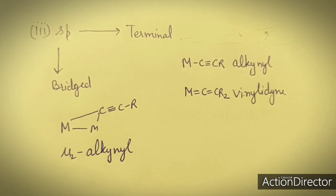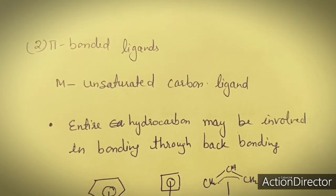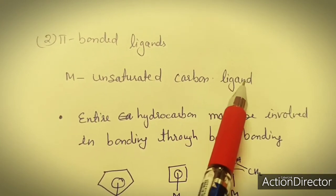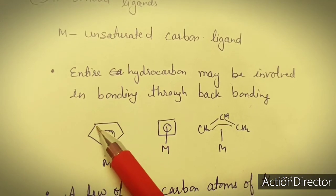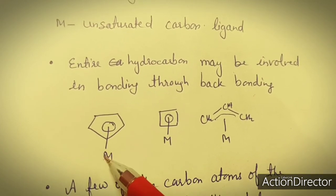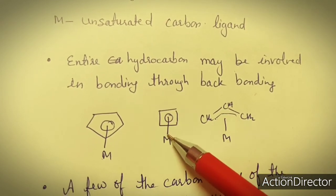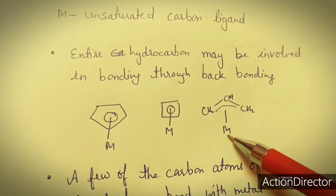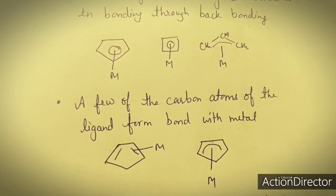Those were the sigma bonded ligands. Now there may be pi bonded ligands, where the metal is attached to an unsaturated carbon ligand. In this case, the entire hydrocarbon may be involved in bonding through back bonding. For cyclopentadienyl, all five atoms can form a bond with the metal center. For cyclobutadiene, all four carbon atoms can be involved in pi bond formation with the metal center. For allyl ligand, all three carbon atoms are involved in bonding to the metal center.